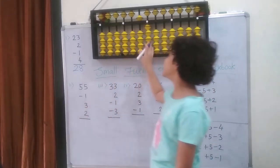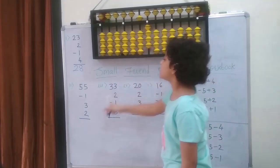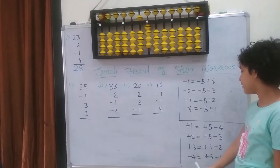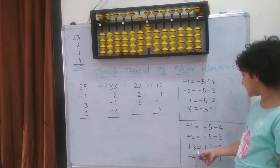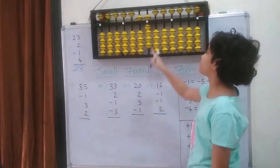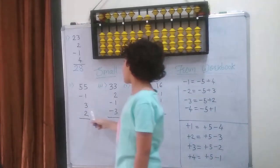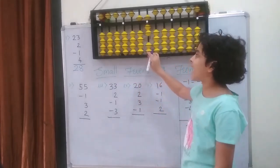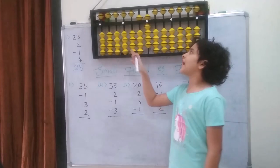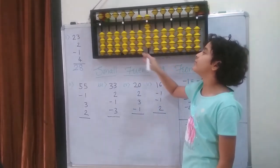Then I am going to add 3. I cannot because I don't have enough beads. So this is addition. I am going to use the addition formula, which is plus 3 equals to plus 5 minus 2. So plus 5 and minus 2: 1 and 2. Then I am going to add 2. I can because I have 2 beads left: 1 and 2. So the answer is 5 and 5, 6, 7, 8, 9 — that is 59.